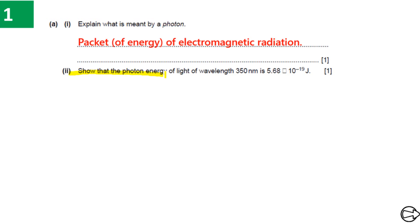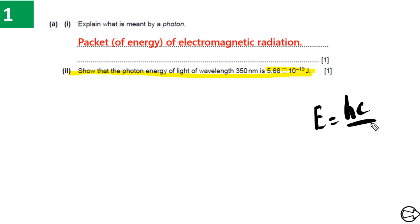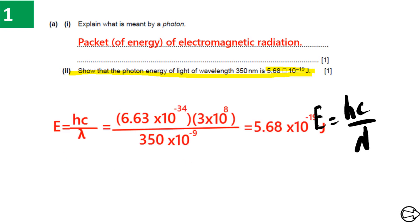For the next question, we need to show that the photon energy of light of wavelength 350 nanometers is equal to 5.68 times 10 to the minus 19 Joules. It is quite straightforward if we understand the relationship between wavelength and energy of photons. The basic formula we need is E = hc/λ, where h is Planck's constant, c is the speed of light, and λ is the given wavelength. We simply plug in values to calculate photon energy.